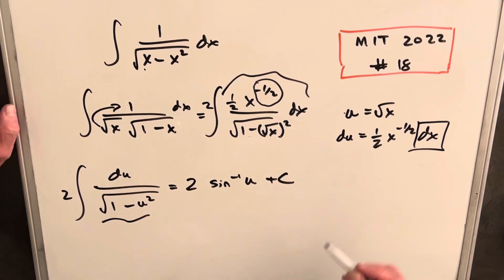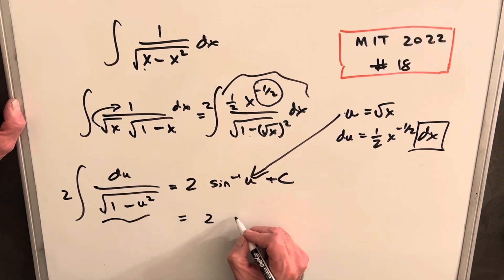And then to get our final solution, all we need to do is back substitute here. And we're going to end up with our final answer, two sine inverse square root of x plus c. And we're done.